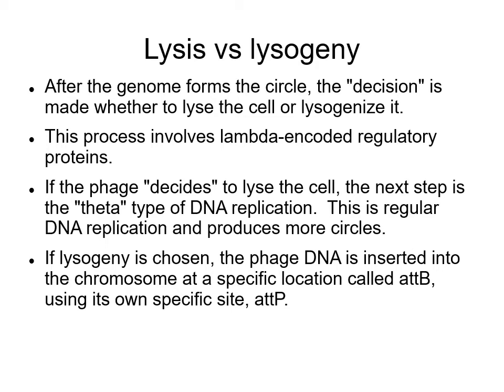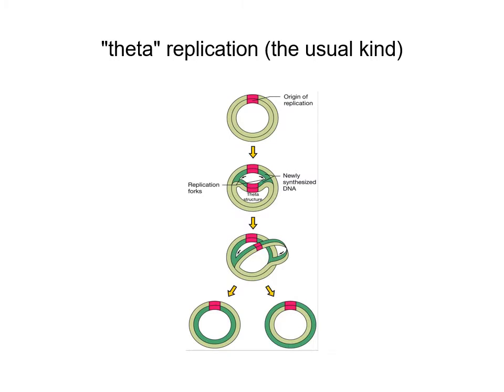After the genome forms a circle, the decision is made whether to lyse the cell or lysogenize it. This involves lambda-encoded regulatory proteins. If going through lytic replication, the next thing that happens is the theta form of DNA replication — regular DNA replication where the phage first produces more circles. Replication starts at an origin and forms two replication forks that move in opposite directions around the circle, eventually producing two more circles. Theta replication is the first part of replication during the lytic life cycle.